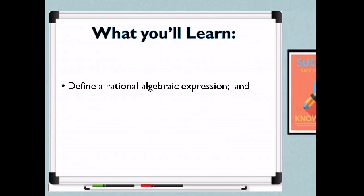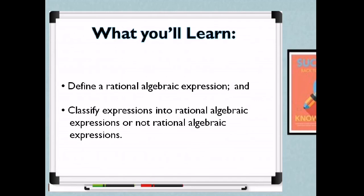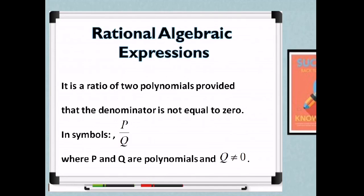What you will learn today: Define a rational algebraic expression, and classify expressions into rational algebraic expressions or not rational algebraic expressions. So what is a rational algebraic expression? It is a ratio of two polynomials provided that the denominator is not equal to zero. In symbols, P over Q, where P and Q are polynomials and Q is not equal to zero.